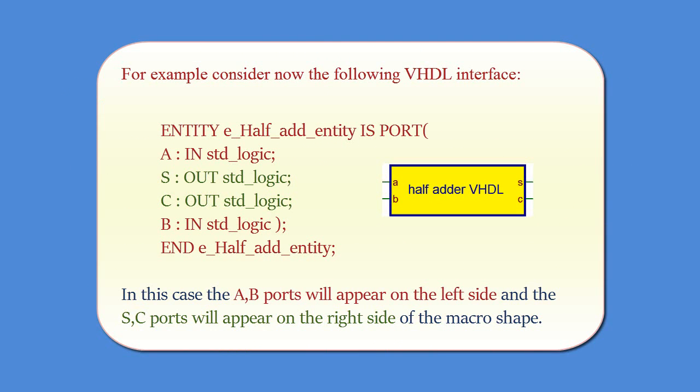For example, consider now the following VHDL interface. In this case, the A, B ports will appear on the left side and the S, C ports will appear on the right side of the macro shape.